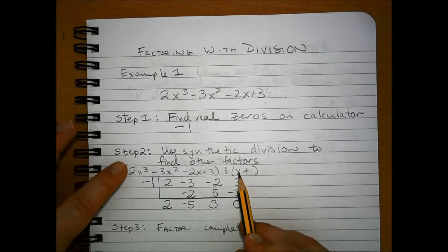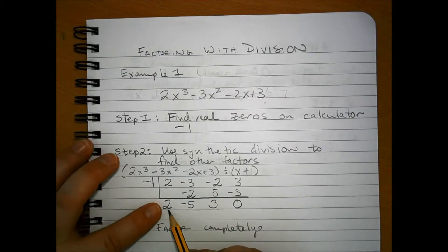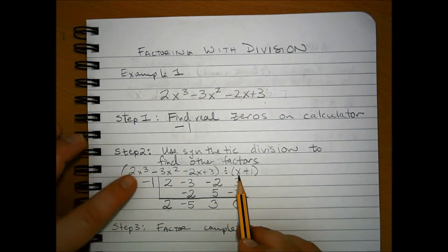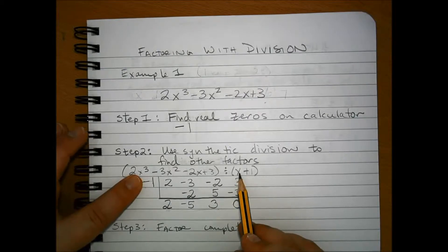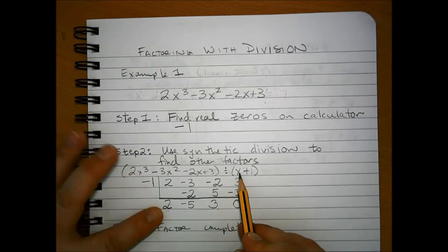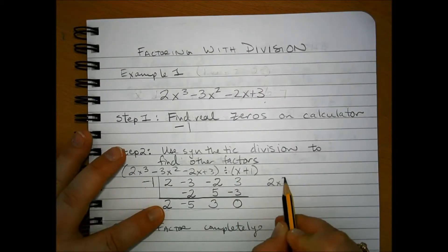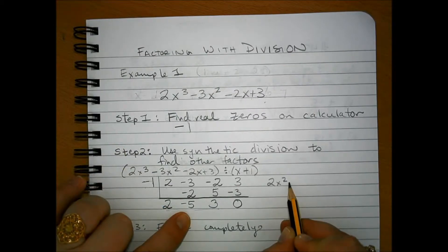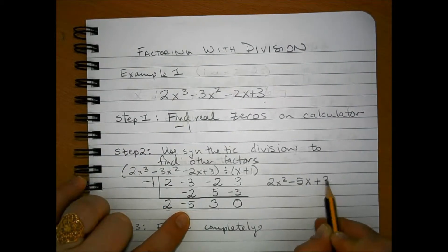So that means that our first term here in our quotient would be like taking 2x cubed and dividing by x. That's going to give us 2x squared. Then we're going to have a minus 5x and then a plus 3.